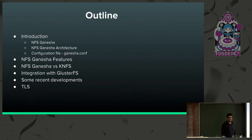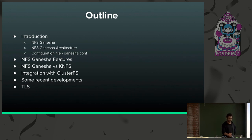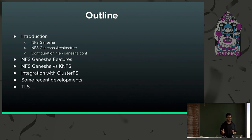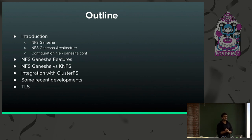The outline of my talk is: I'll start with an introduction to NFS Ganesha and explain its architecture. I'll talk about a component of NFS Ganesha — the configuration file known as ganesha.conf. Then I'll move on to NFS Ganesha features and compare NFS Ganesha with kernel NFS. Since I'm mostly working with GlusterFS and not Ceph, I'll talk about Gluster with NFS Ganesha, then recent and ongoing developments, and finally I hope to get some feedback regarding transport layer security, which is a hot topic in NFS.